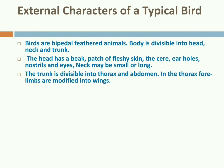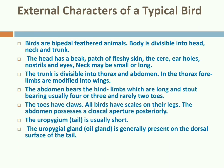The trunk is divisible into thorax and abdomen. In the thorax, the forelimbs are modified into wings. The abdomen bears the hind limbs, which are long and stout, bearing usually four or three, sometimes rarely two toes. The toes have claws. All birds have scales on their legs. The abdomen possesses a cloacal aperture posteriorly. The uropygium, or tail, is usually short in birds. The uropygial gland, also known as the oil gland, is generally present on the dorsal surface of the tail.